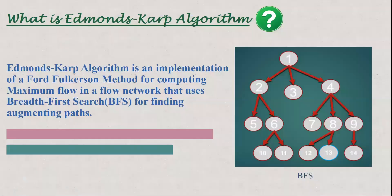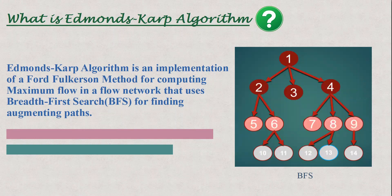What is the Edmonds-Karp algorithm? It is simply an implementation of the Ford-Fulkerson method for computing maximum flow in a network using BFS. Here is a given tree which shows how BFS works.